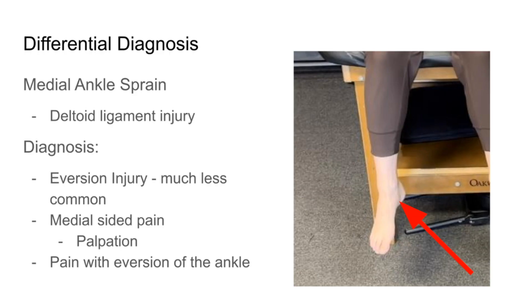Also look out for medial ankle sprains — a deltoid ligament injury. Pain on the inside of the ankle with palpation of the deltoid ligament may rule it in, and it typically involves an eversion mechanism — the opposite of the lateral ankle sprain's inversion mechanism. Keep in mind, someone with a lateral ankle sprain could have medial-sided pain from swelling or bone/cartilage injury. Pain with eversion may also occur in high ankle sprain patients. Use clinical reasoning to arrive at a good diagnosis.